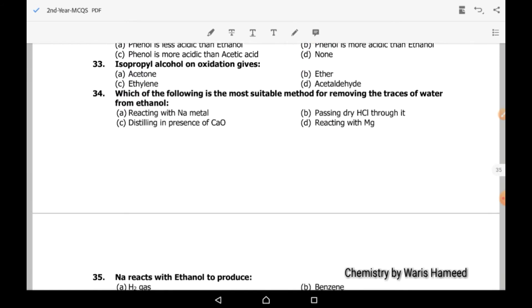In case of MCQ 33, isopropyl alcohol on oxidation gives acetone. It's a secondary alcohol. And when we perform its oxidation, it converts into acetone. Tertiary alcohol usually show resistance against oxidation. So firstly they convert into alkene and then there will be the formation of other products.